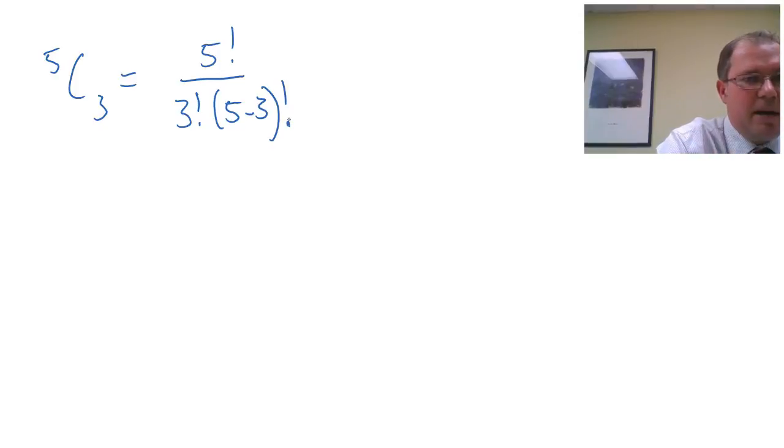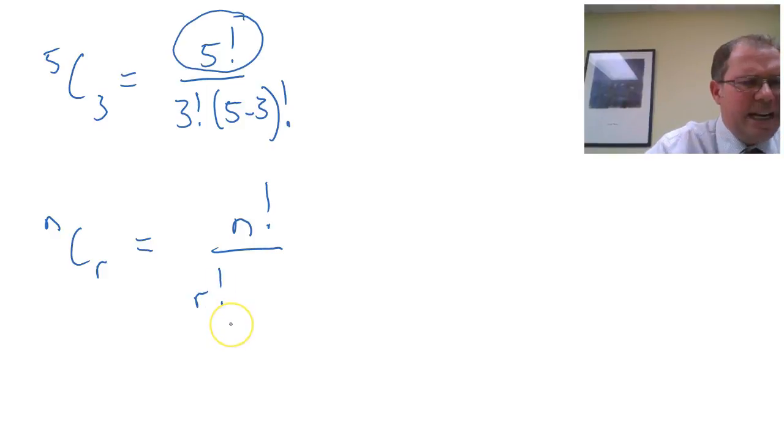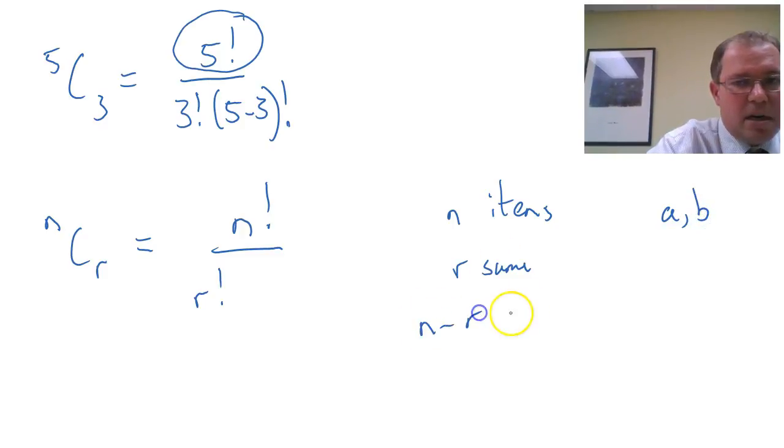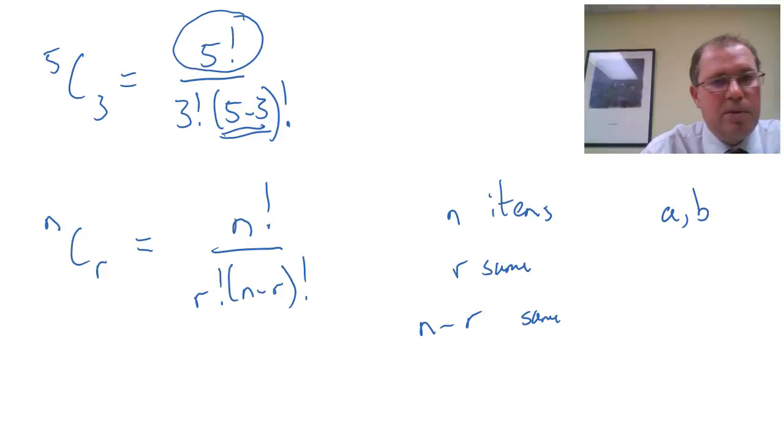So now let's think about finding a formula for n choose r. Now n choose r, imagine they're all different, n factorial. There's the n factorial there. r of them are the same, so I need to divide by r factorial. Now how many have I got left over? Well, I've got n items. r are the same. I only have a's and b's, so I must have n minus r are also the same. So this must be an n minus r factorial, which matches beautifully with the 5 minus 3 factorial there.